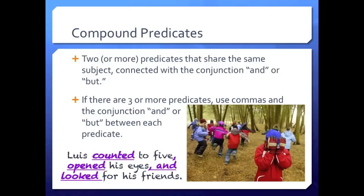Next, let's take a look at compound predicates. To make a compound predicate, you will put together two or more predicates. You can use 'and' or 'but' to connect them. Remember that a simple predicate is a verb. These predicates will share the same subject. If there are three or more predicates, put commas in between them. The conjunction 'and' or 'but' should go before the last one.